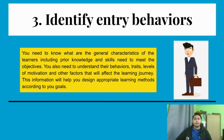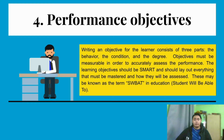The third step is Identify Entry Behavior. In this step, you need to know the general characteristics of the learners — your team — including prior knowledge and skills needed to meet the objective. You also need to understand their behaviors, traits, level of motivation, and other factors that will affect the learning journey. This information will help you design appropriate learning methods according to your goals.